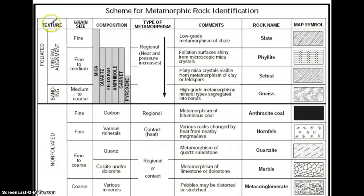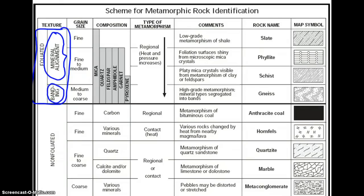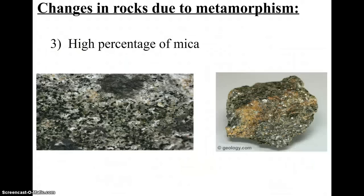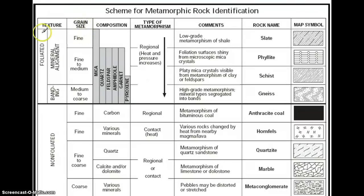The third change is that metamorphic rocks usually have a high percentage of mica — biotite mica and muscovite mica — which are flat sheets and very shiny. If we look at the foliated rocks on the top of the chart, all of them have mica in them. In phyllite, we have microscopic mica. In schist, the mica is visible. And in gneiss, the black bands are mica.